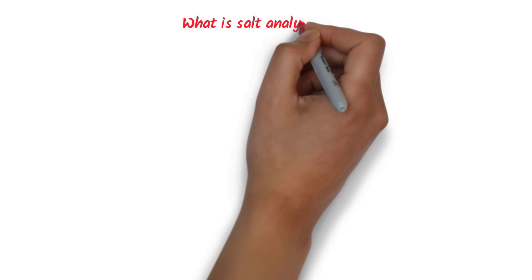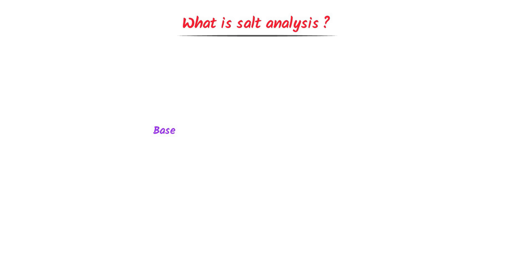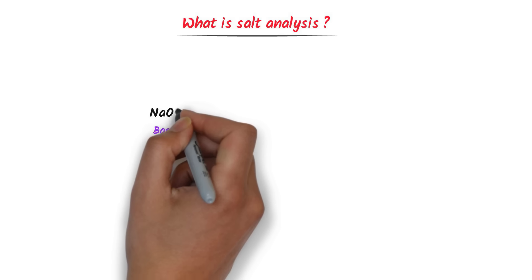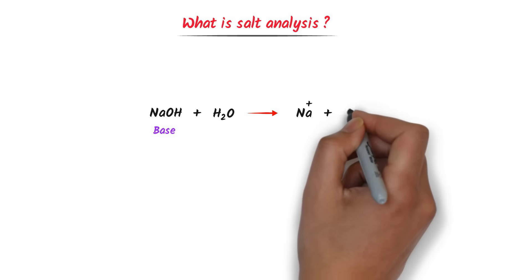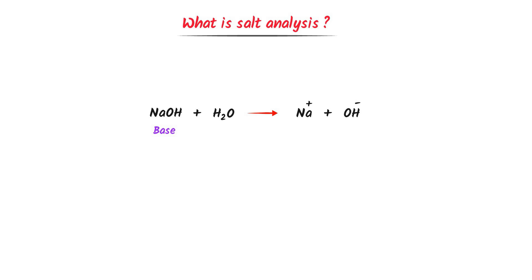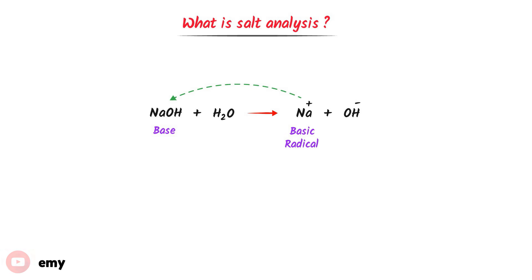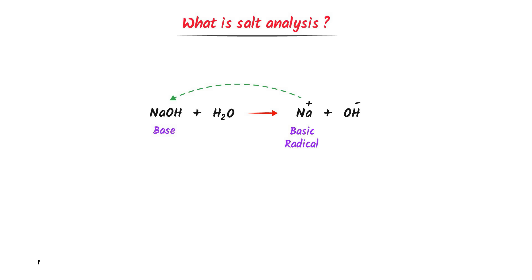Now what is salt analysis? Consider a base, sodium hydroxide. When we add water to it, sodium and hydroxide ionize into their respective ions. Now this cation of sodium is known as a basic radical, because this sodium ion belongs to the base sodium hydroxide. So we call it basic radical.